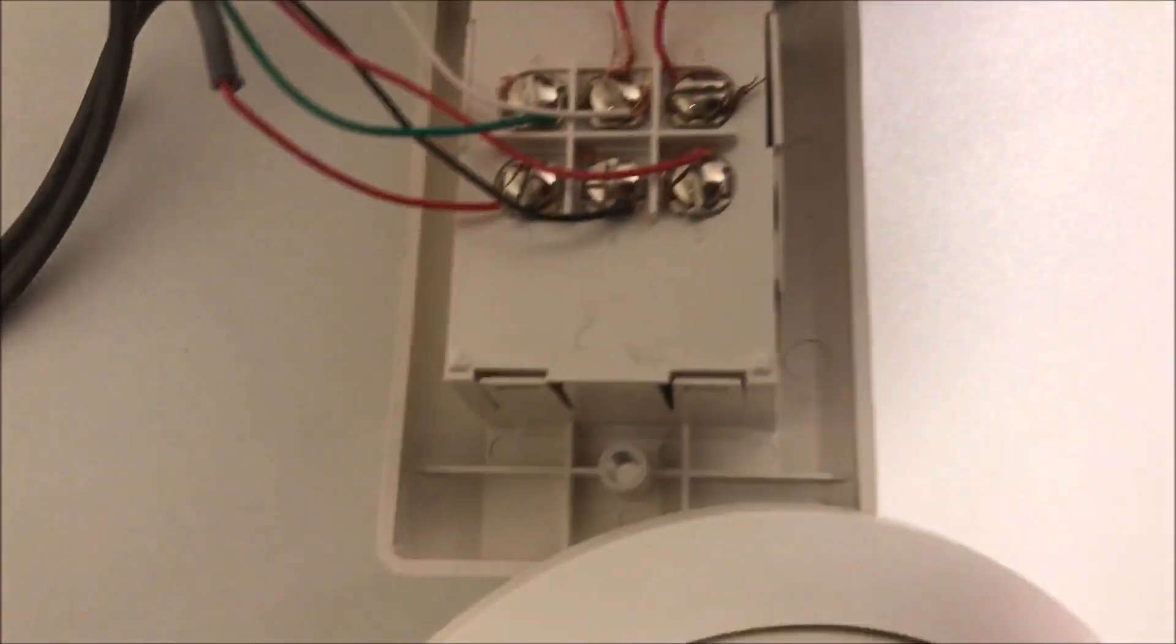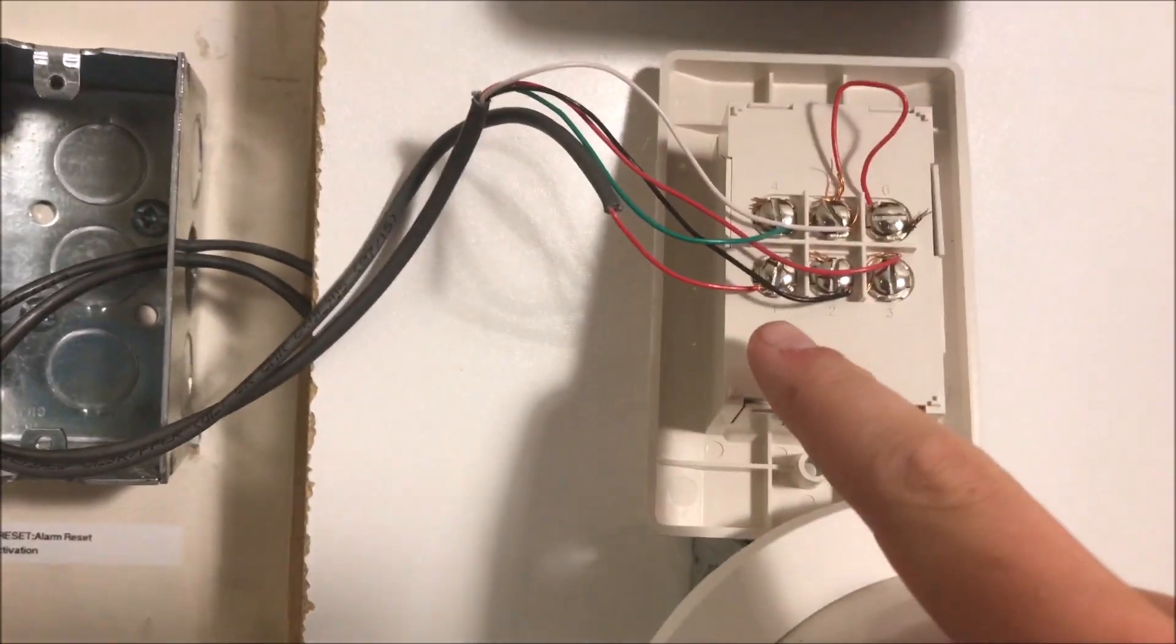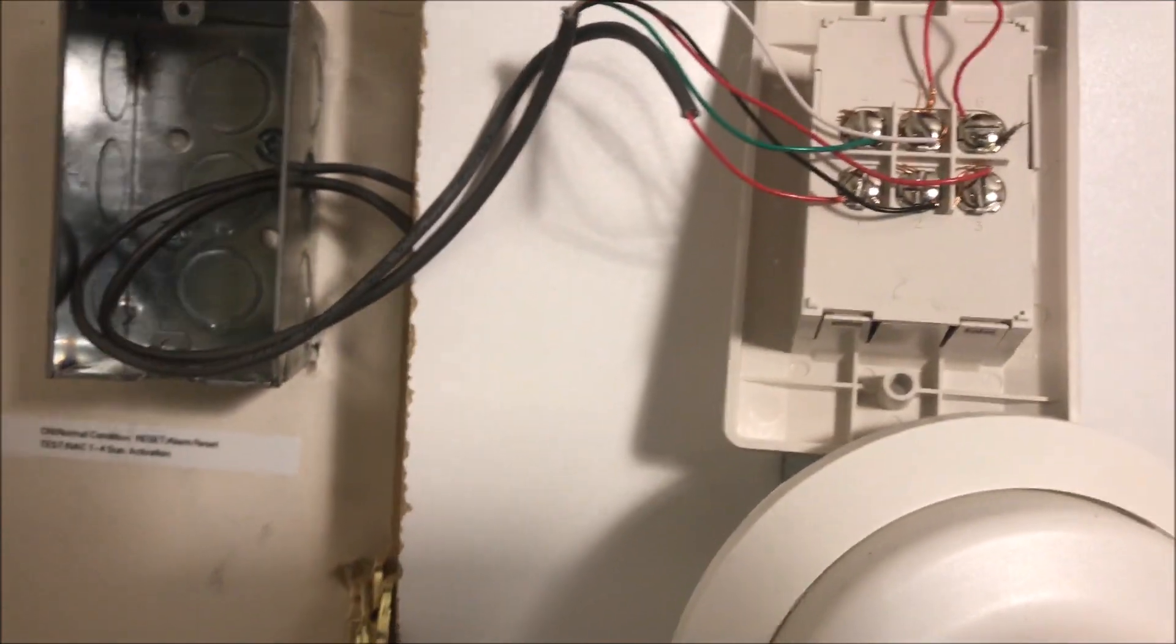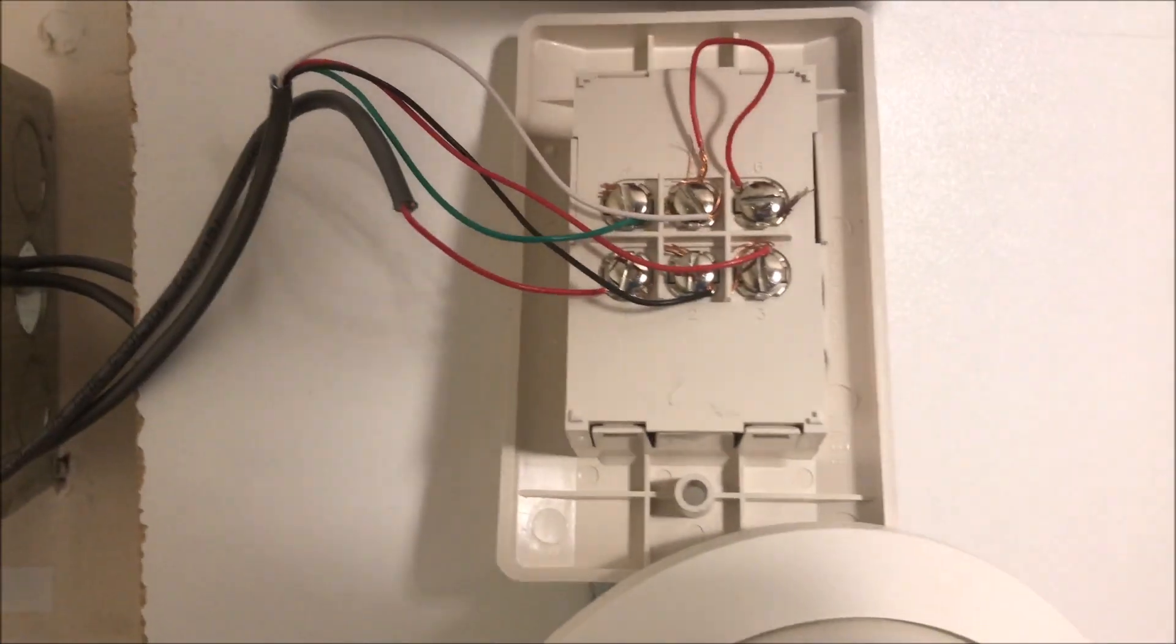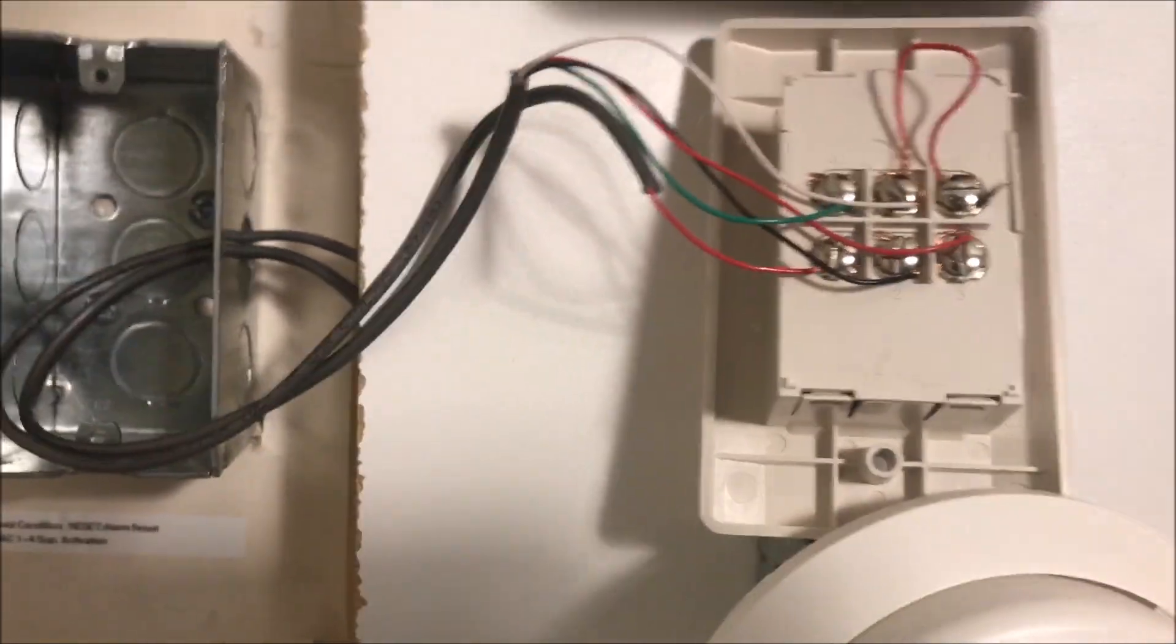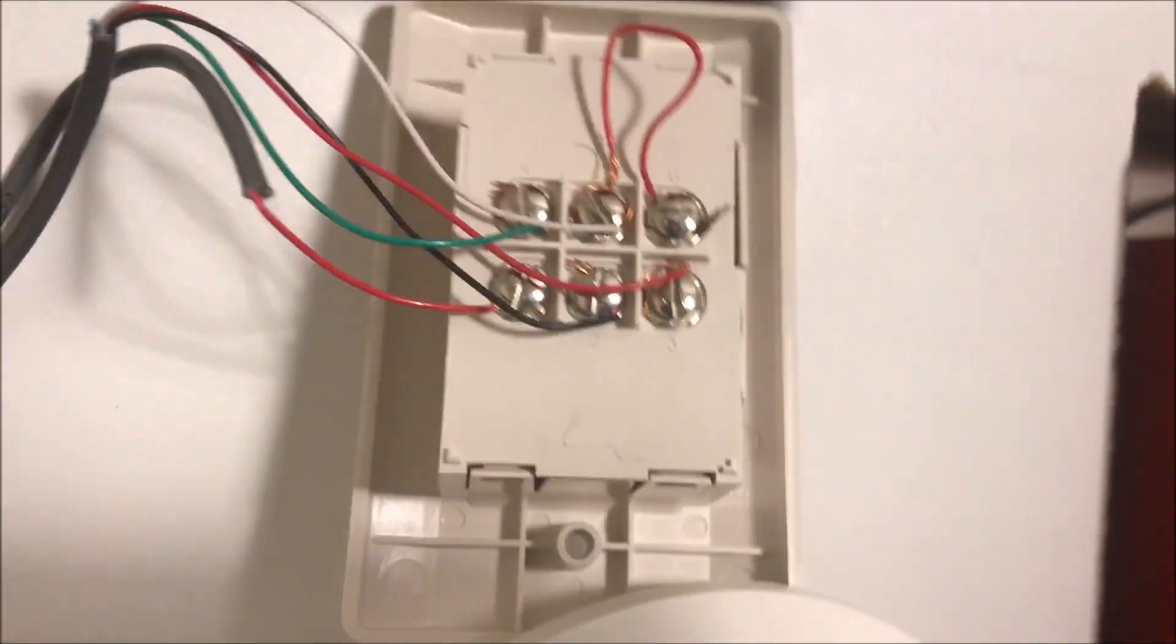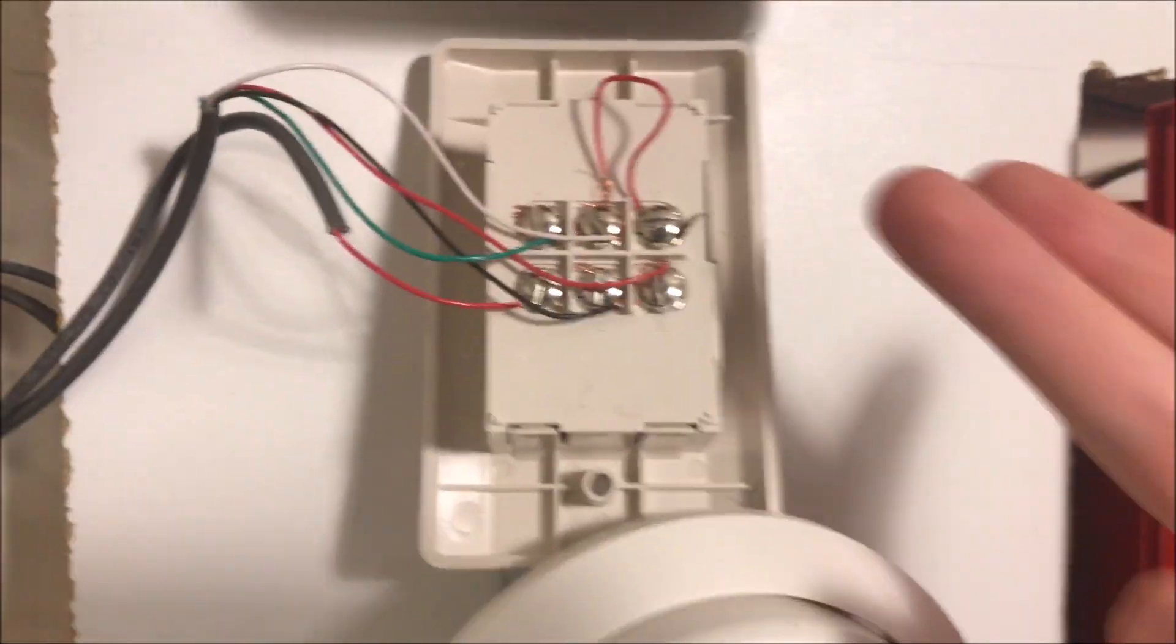The way that this would normally be wired up is your red LED would go to your duct smoke detector, because this is a duct smoke detector key switch. So you have your detector way up in a duct, well not in a duct but on a duct, way up that you can't reach. So this is a remote test station for it.